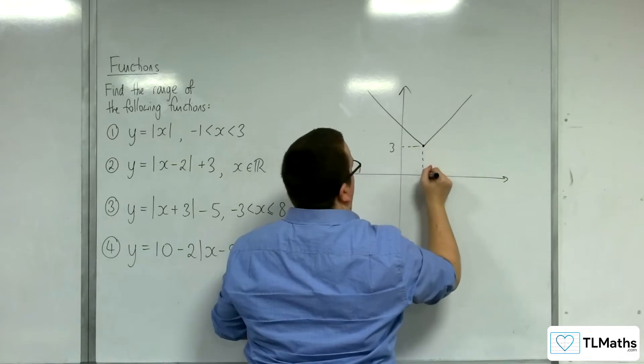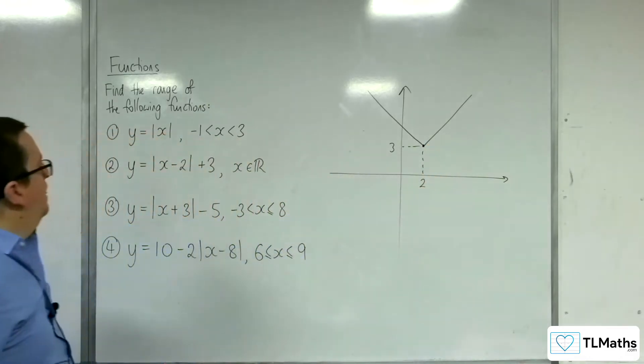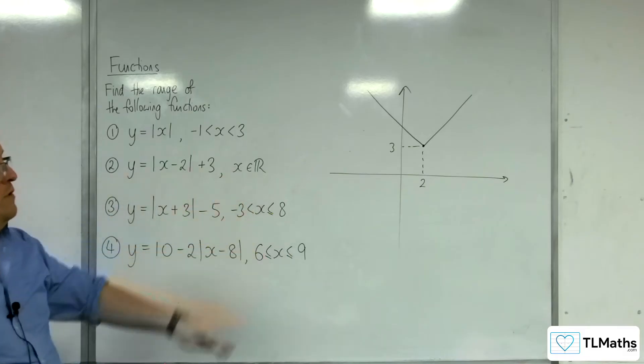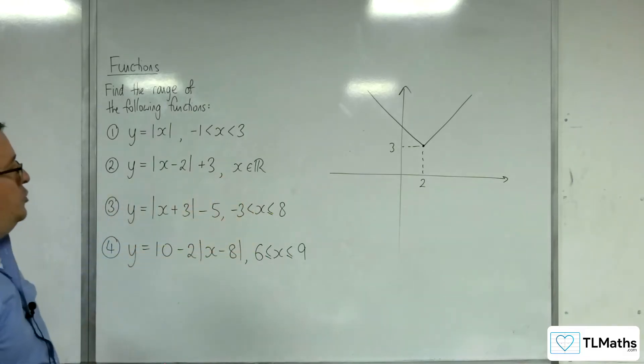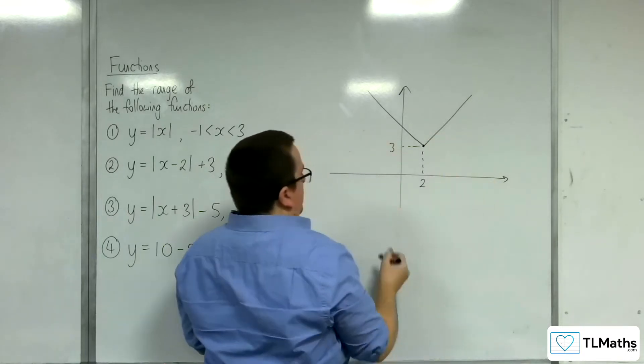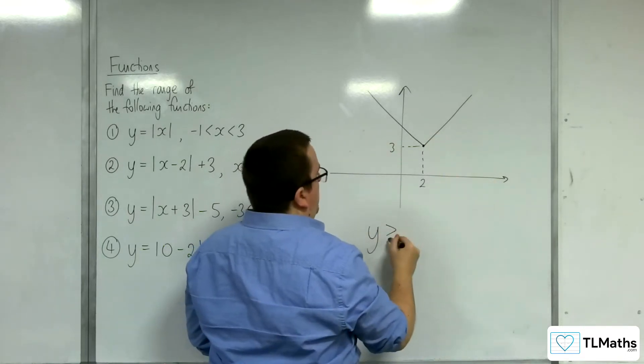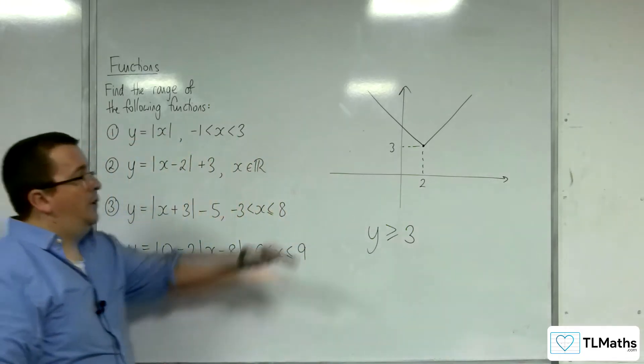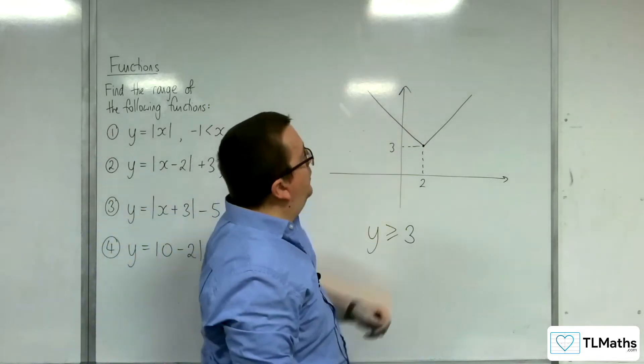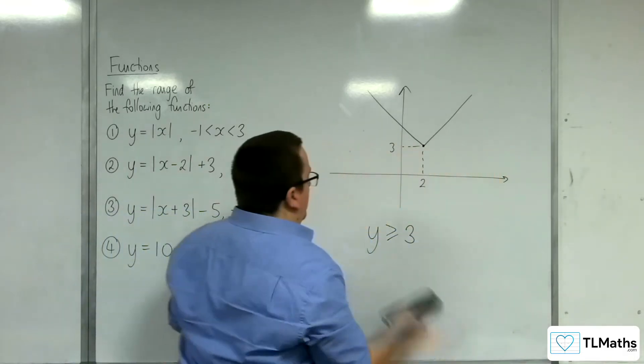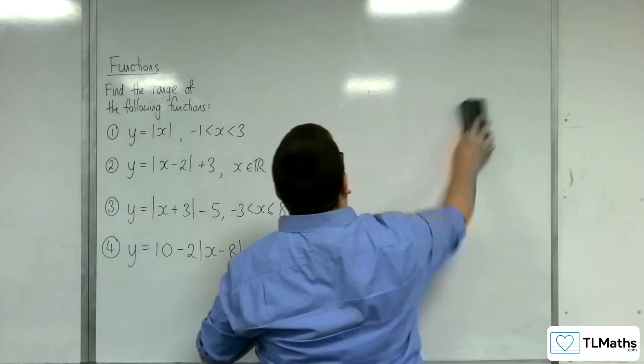So that's at 3, 2, like that. So x belongs to the real numbers, so it's allowing all real values of x. What's the range? Well, the lowest point is 3. So the range must be y is greater than or equal to 3. So from that point, upwards as far as you can go. y is greater than or equal to 3. That's the second one.